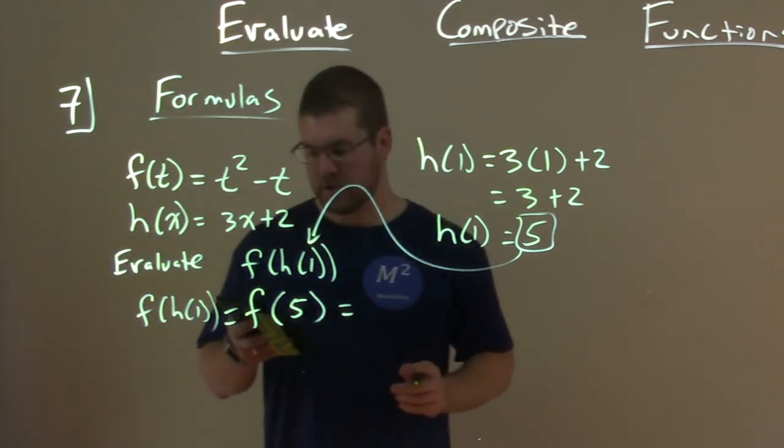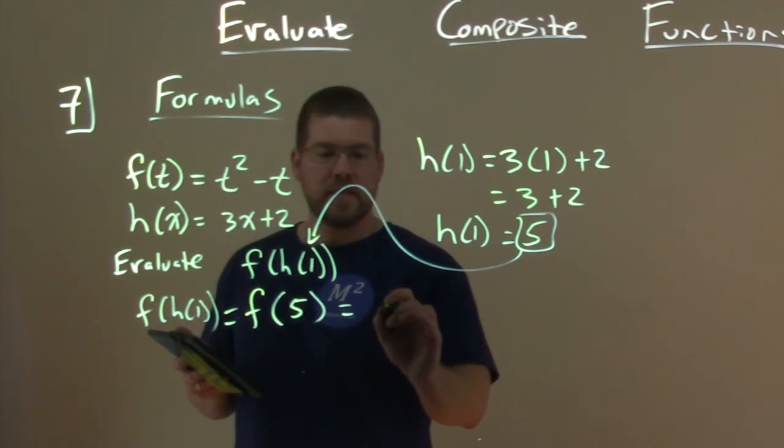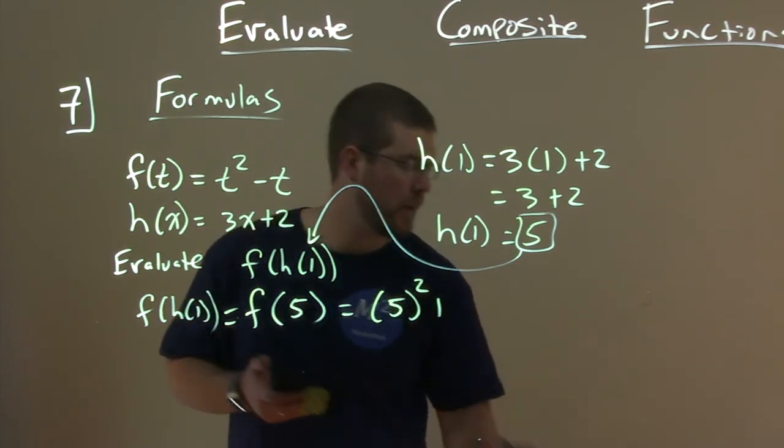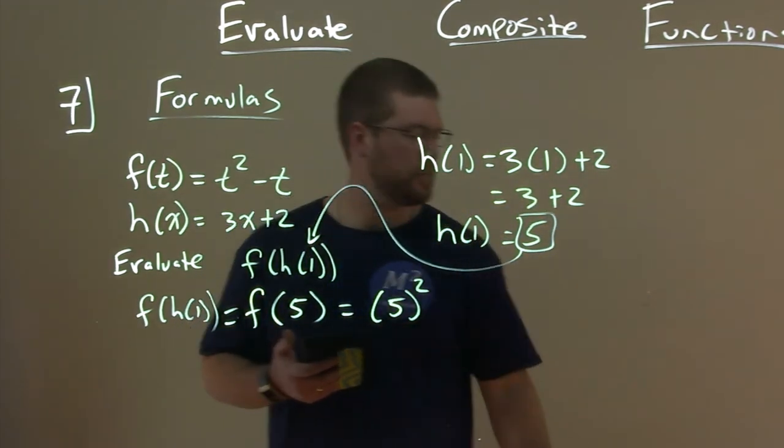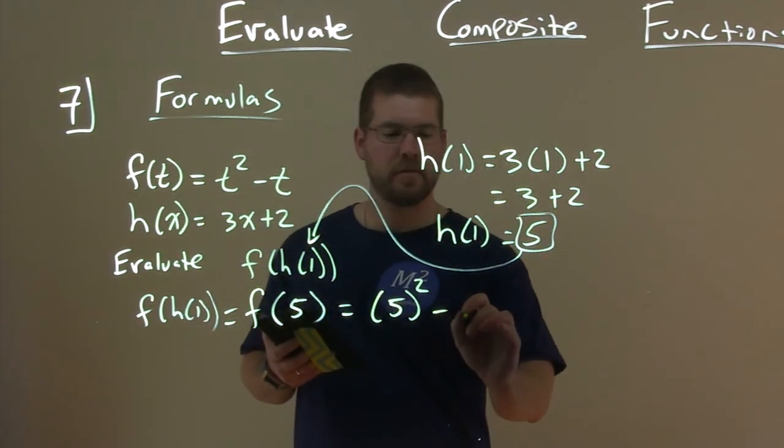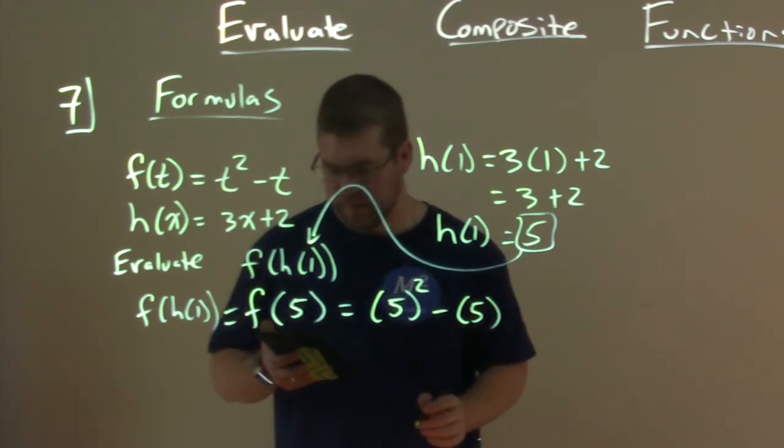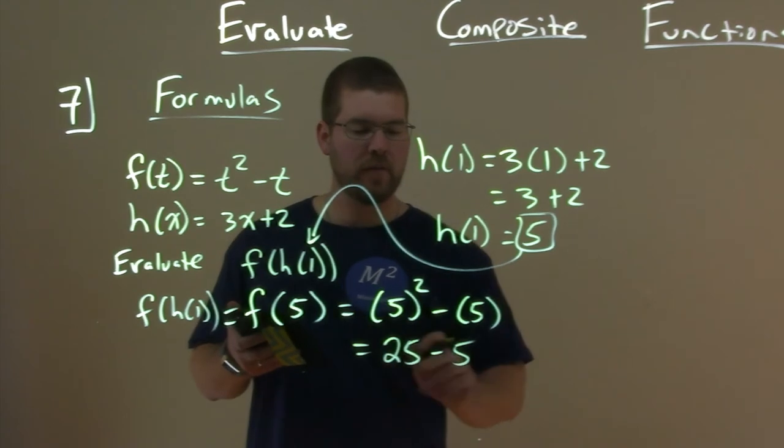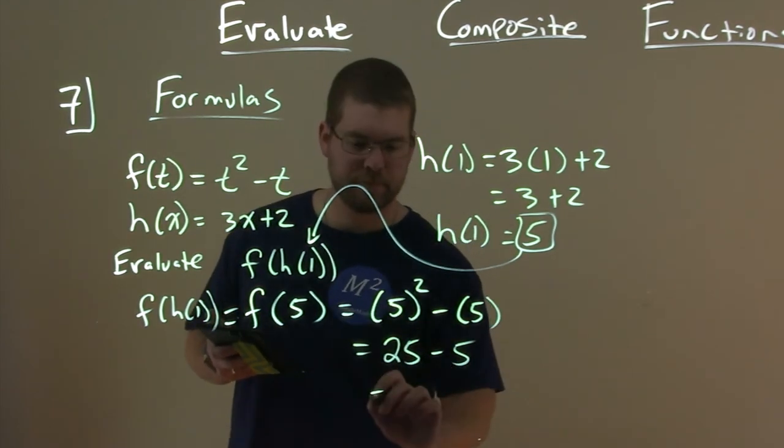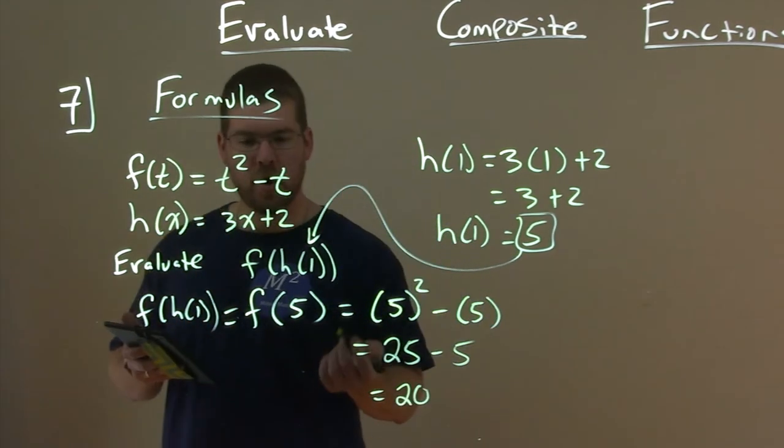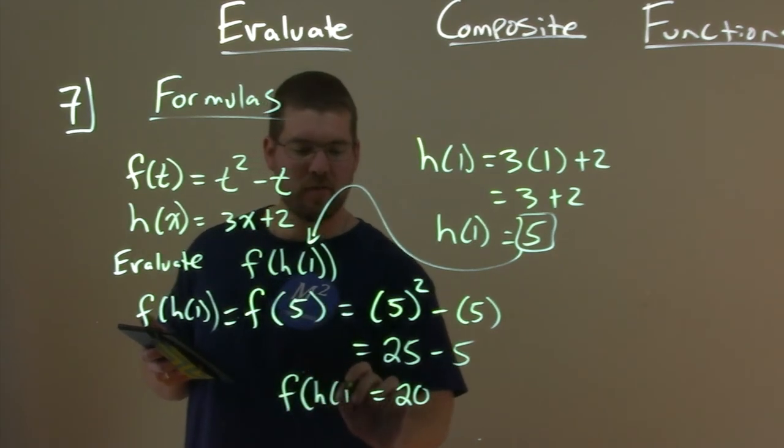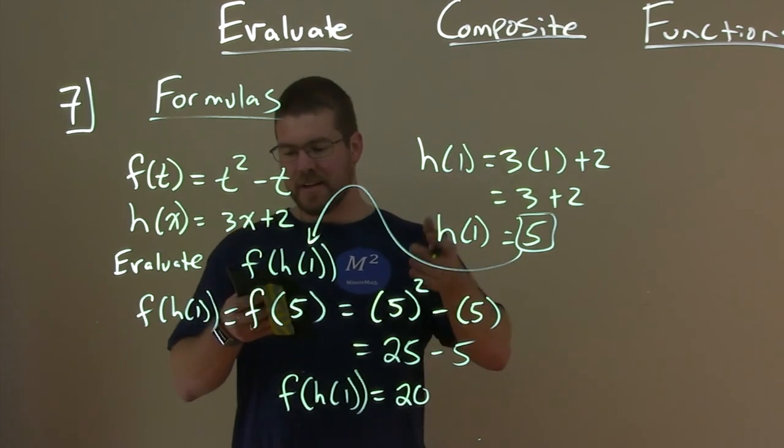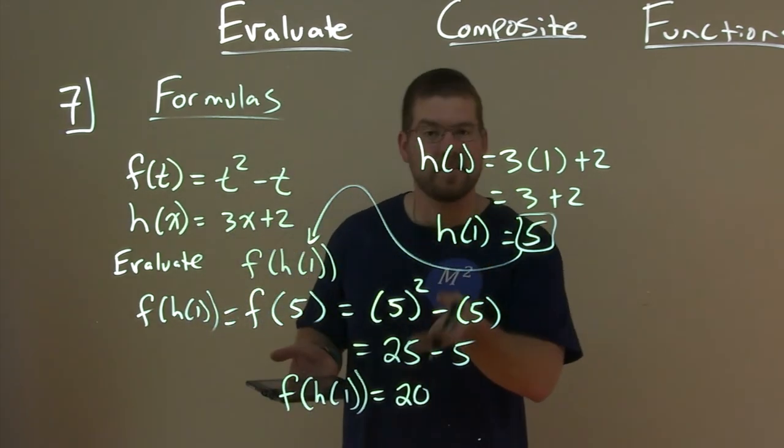Well, now we look at the f of t function. So we take 5 and plug it in for t, so 5 squared, oh, minus, minus 5 in for the other t. 5 squared is 25, minus 5 here. 25 minus 5 is 20. So, all said and done, f of h of 1 is equal to 20, and there we've got it. We've got some practice here with that.